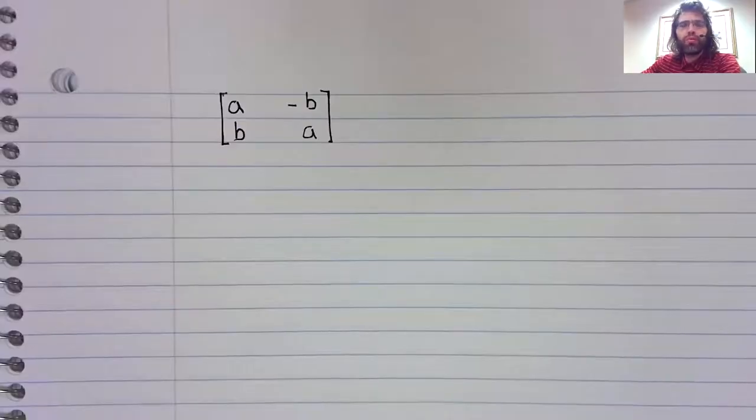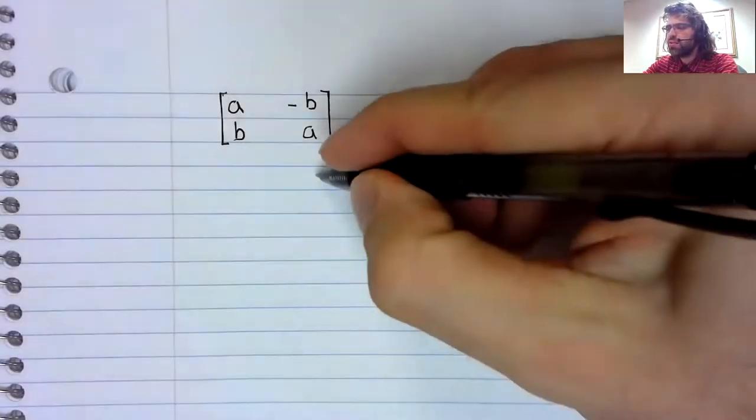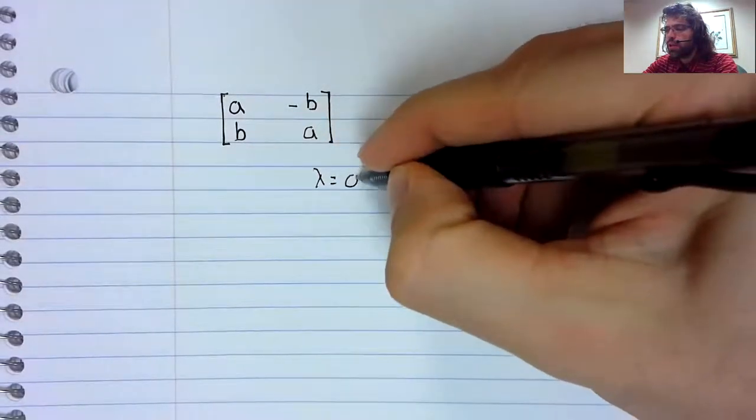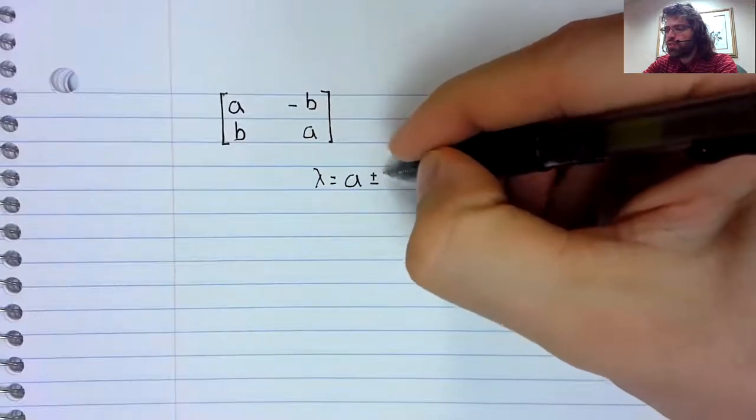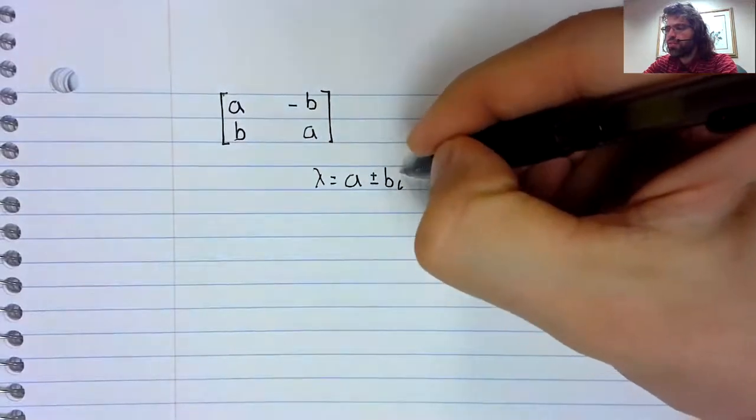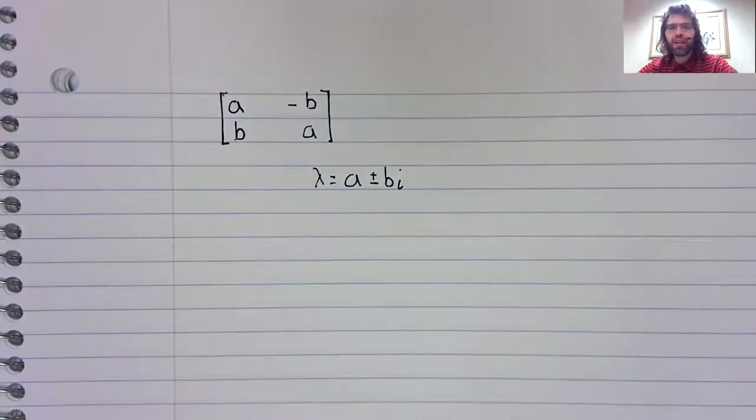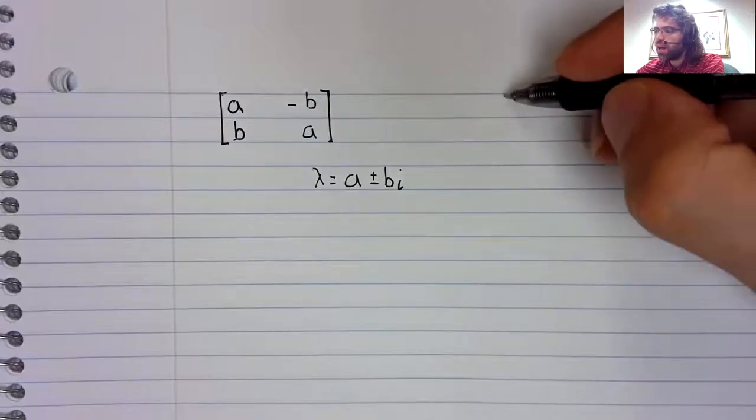The very special form is this. And a matrix of this form always has complex eigenvalues, A plus or minus B I.